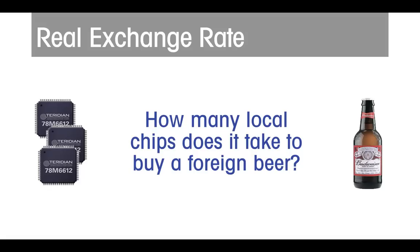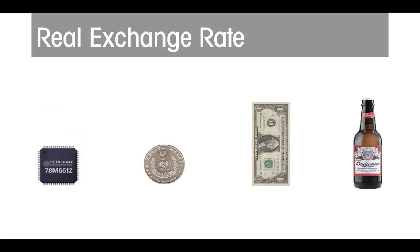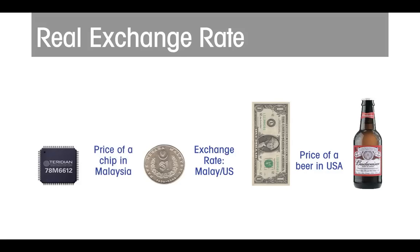To answer the latter question, we need three bits of information. First, how many American dollars does it take to buy the beer — that is, the US price level? Second, how many Malaysian ringgits it will take to buy a US dollar — that is, the nominal exchange rate? And finally, how many semiconductor chips have to be sold to obtain a ringgit, which is determined by the Malaysian price level.